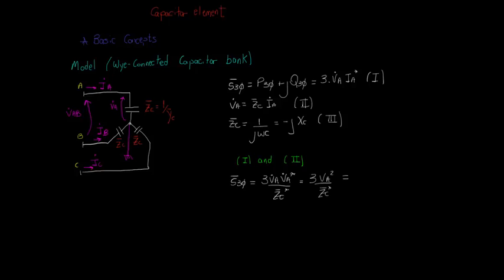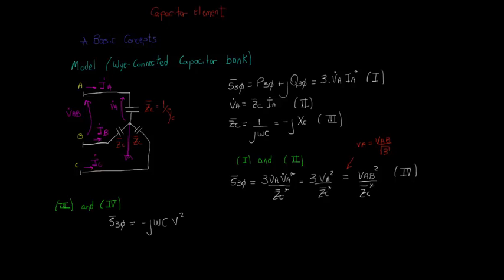In a three-phase symmetric and balanced system, Va is equal to Vab divided by square root of 3. Applying this relation, we get that the three-phase complex power is Vab squared divided by Zc conjugated. Finally, from expressions 3 and 4, we find that the three-phase complex power is equal to minus J omega C times V squared, where V is the line-to-line voltage.